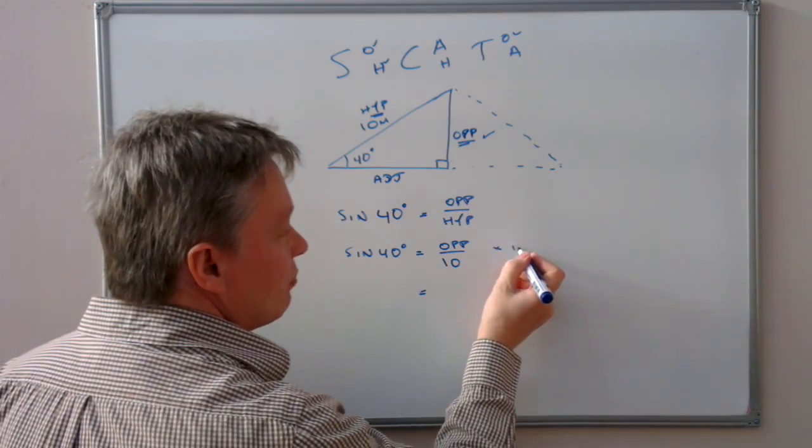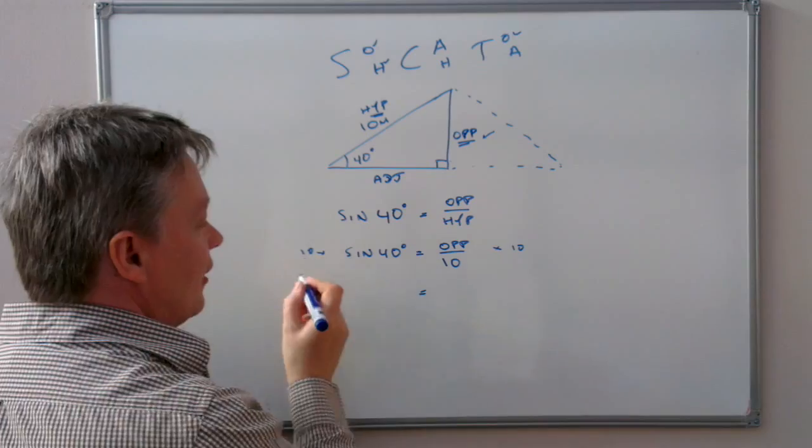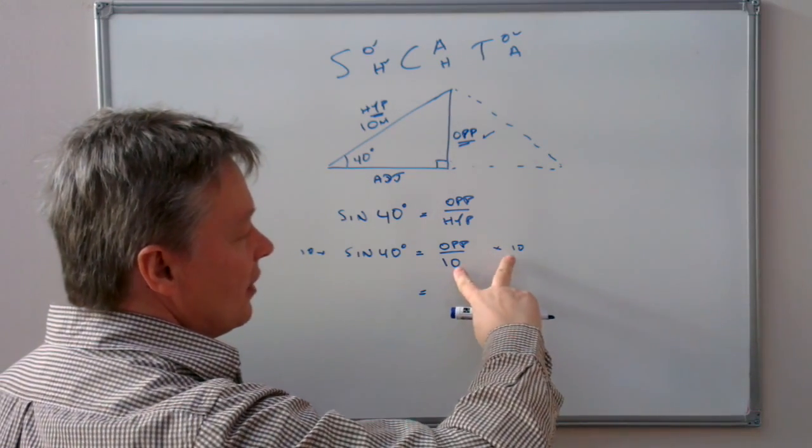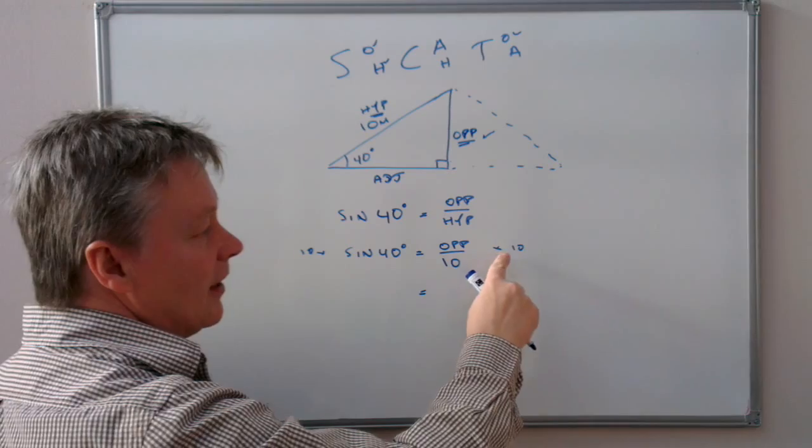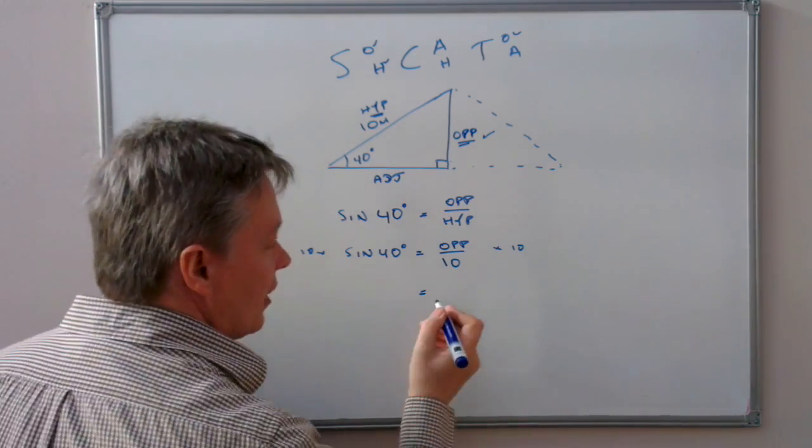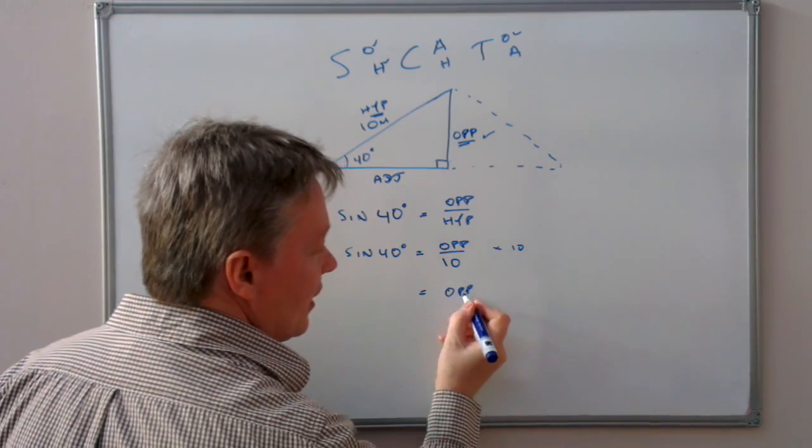Now if I multiply both sides by 10, it means that the division of 10 and the multiplication of 10 will cancel themselves out. So on this side I'm going to be left with the opposite, which is the information that I'm looking for.